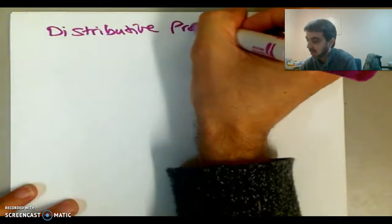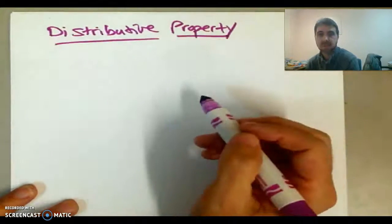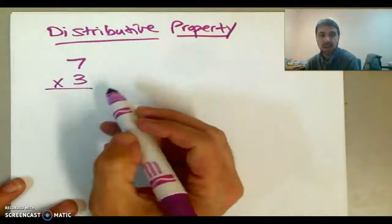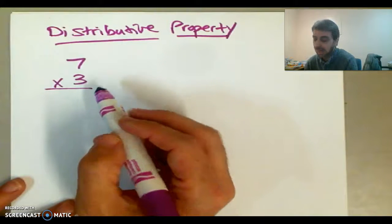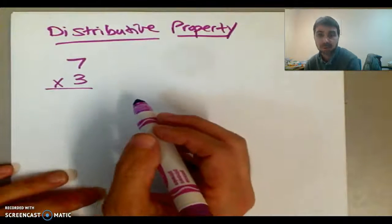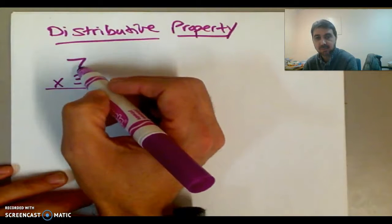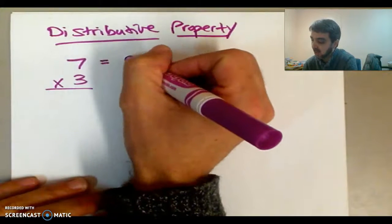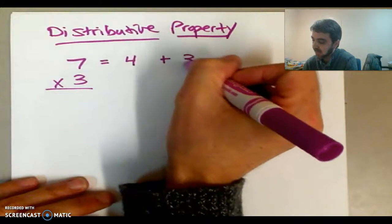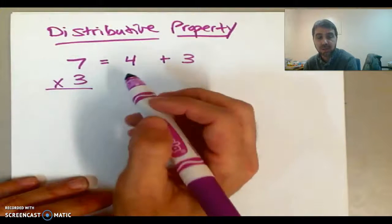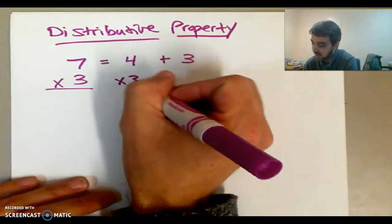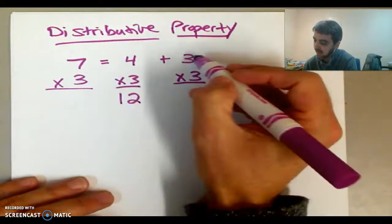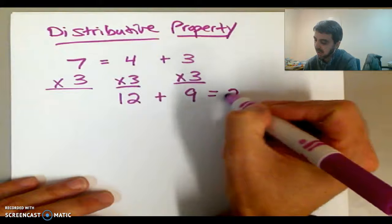Distributive property. And that fancy word, all it means is this. If I have a problem like 7 times 3, and let's say I don't know what that is, I can break it up into two or more problems. I can break apart the 7 into any two numbers that add up to 7. So for example, I could say 7 equals 4 plus 3. So instead of multiplying 7 times 3, I would multiply 4 times 3, and I would multiply 3 times 3. And if I do 4 times 3, I know that's 12, and 3 times 3 is 9. And if I add those up, I get 21.